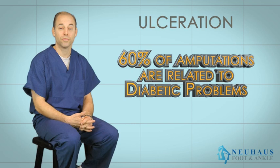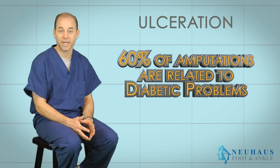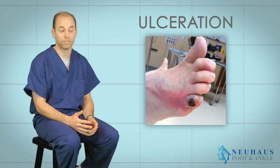Again, according to the American Diabetes Association, about 60% of the amputations that are done each year in the United States are related to diabetic-related problems. So it's a big problem. It's something I see on a regular basis. There's typically not a month that goes by that I don't do some sort of an amputation of a toe or part of the foot.